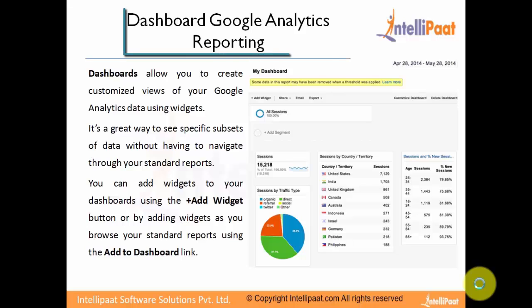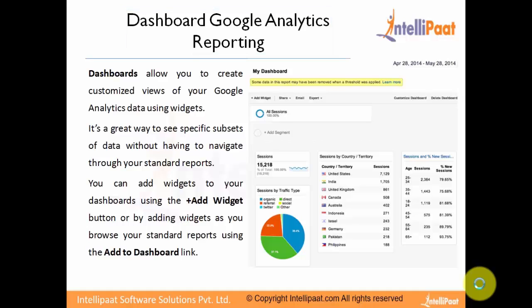Let's take a look at how the dashboard of Google Analytics reporting looks. What is a dashboard to begin with? Dashboards allow you to create customized views of your Google Analytics data using widgets. It's a great way to see specific subsets of data without having to navigate through your standard reports. You can add widgets to your dashboard using the plus 'add widget' button, or by adding widgets as you browse your standard reports using the 'add to dashboard' link. A dashboard gives you a single snapshot summary of the user behavior data you are receiving and a top-level view of what you can do with this data.